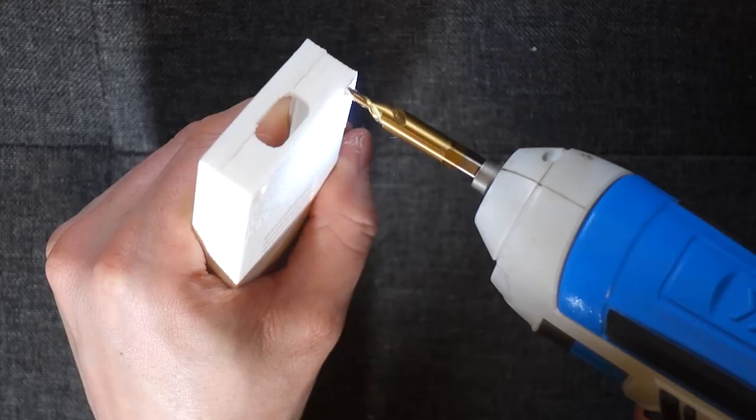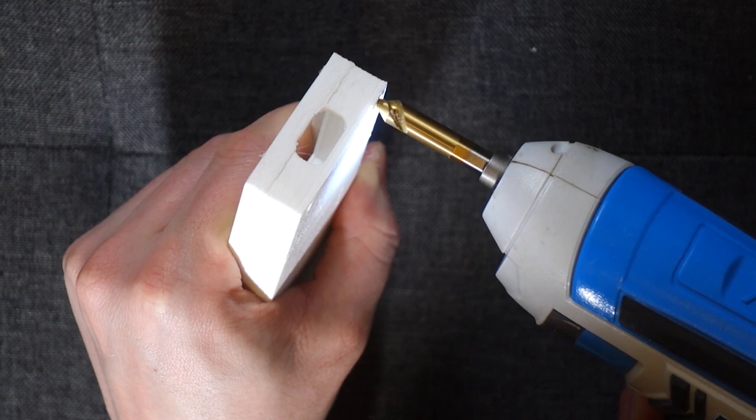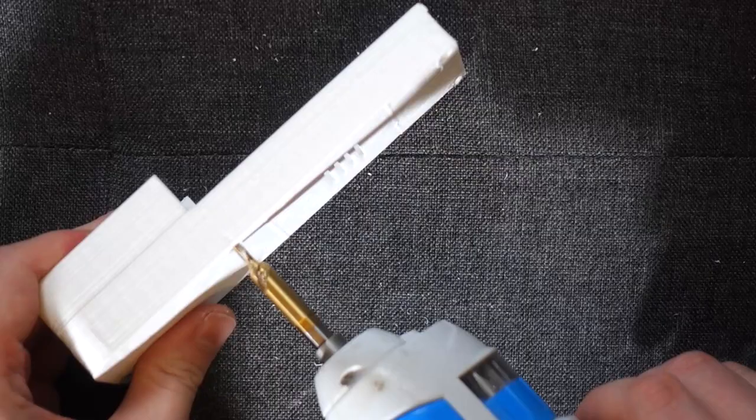Next drill out each hole with a 3mm countersink, paying attention to the direction the screws will go.